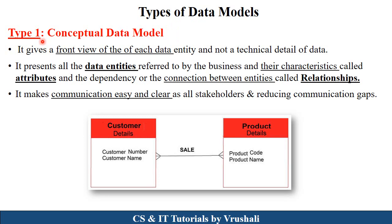The first type is the conceptual data model, which is just a front view of data. In this example, customer sells product — it shows only front-end information. It shows entities, attributes, and their relationships — only three things. Customer with customer number and name, customer sells product with product code and product name. So it shows only front view information, making communication easy and clear to all stakeholders. All users and customers can easily understand which type of information is stored, reducing the communication gap between customer and developer.